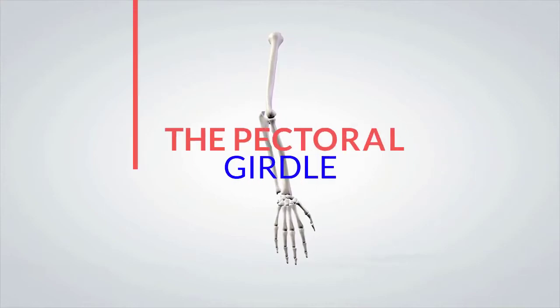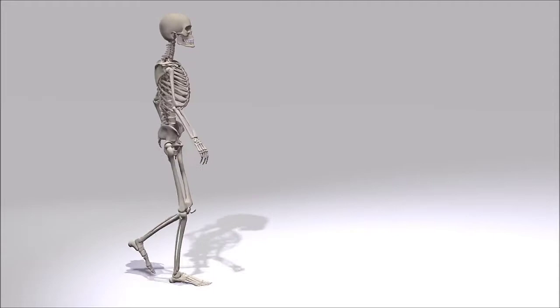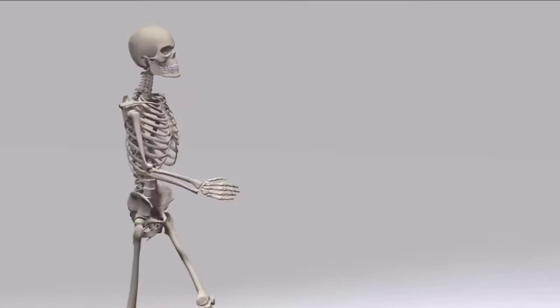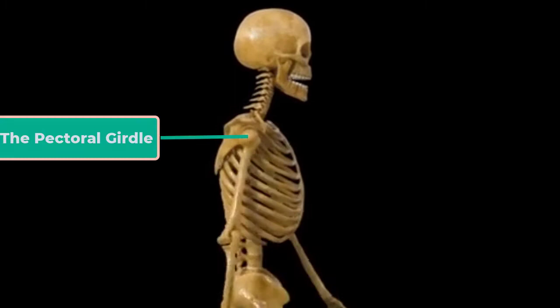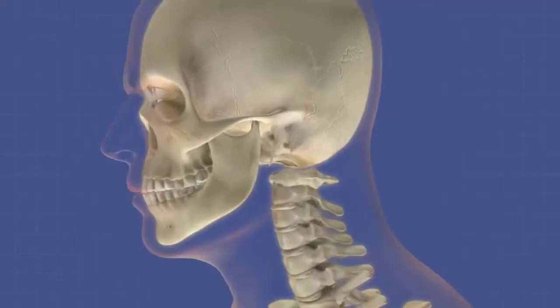The pectoral girdle. The appendicular skeleton includes all of the limb bones, plus the bones that unite each limb with the axial skeleton. The bones that attach each upper limb to the axial skeleton form the pectoral girdle. This consists of two bones, the scapula and the clavicle.